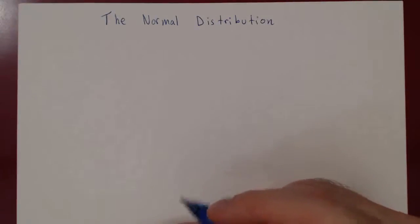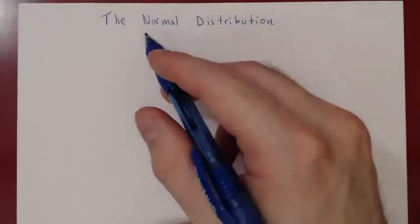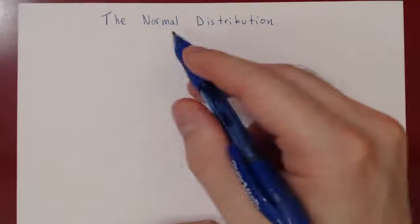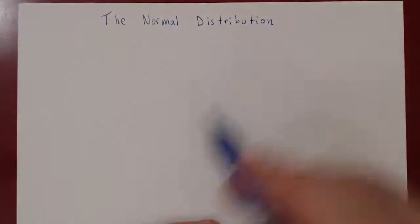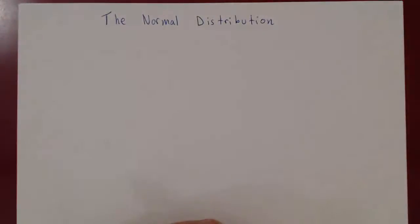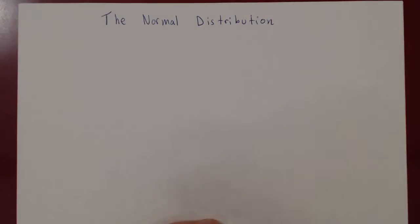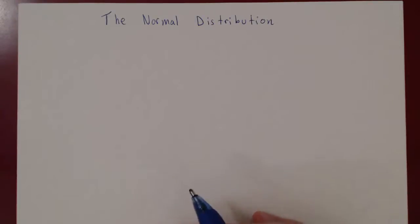In this video, we will consider the so-called normal distribution. This will be the first example that we consider of a continuous random variable, a continuous distribution, and this will be by far the most important distribution in this course.